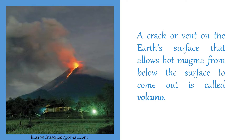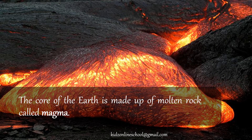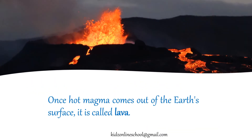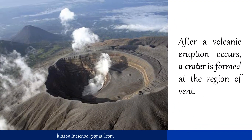About Volcanoes. A clogged vent on the Earth's surface that allows hot magma from below the surface to come out is called a volcano. The core of the earth is made up of molten rock called magma. A vent is the region where the earth's crust is weak and develops a crack. Once hot magma comes out of the earth's surface it is called lava. After a volcanic eruption occurs, a crater is formed at the region of the vent.